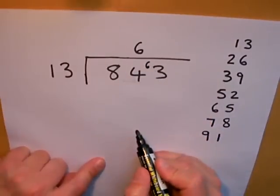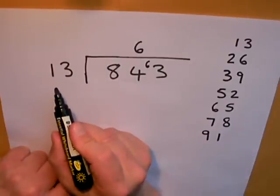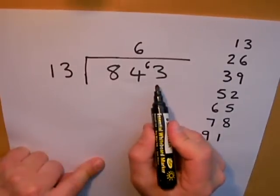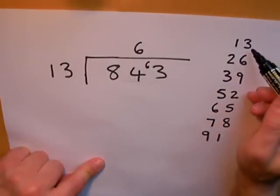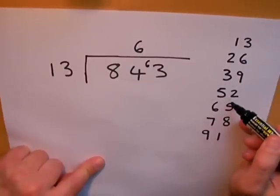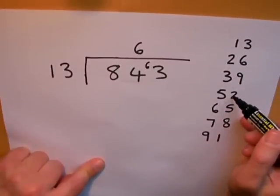The next thing I'm going to say then is 13 into 63. Again I can consult my times table down the side: 1, 2, 3, 4—5 is too many, so it's four times.